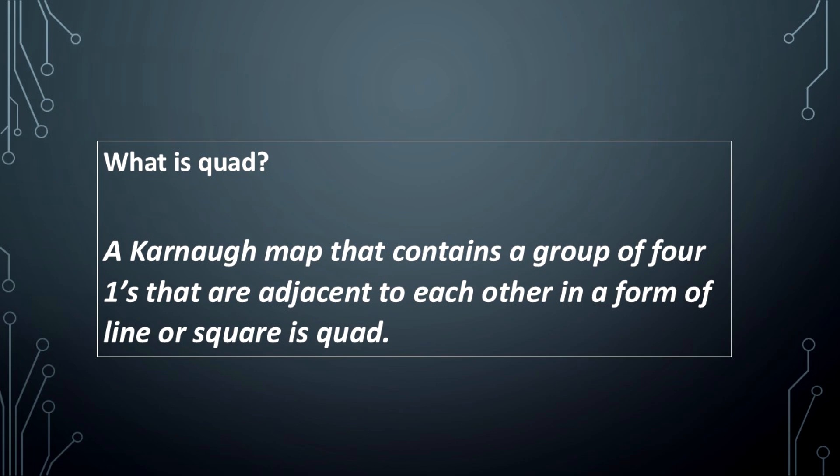What is square? A Karnaugh map that contains a group of four ones that are adjacent to each other in a form of line or square is square.